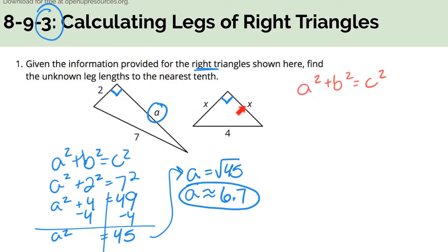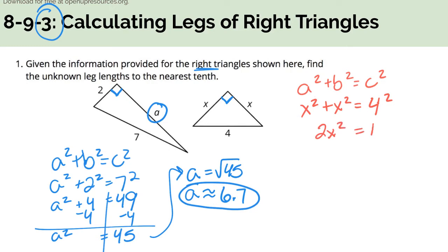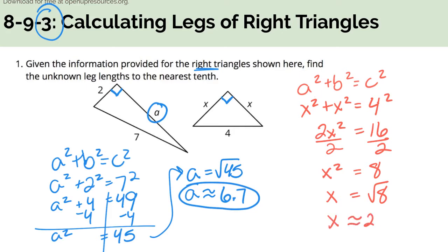This next problem is really unique because there are two sides we don't know, but they're both X, so both of those lengths are the same. I'm still going to use the Pythagorean theorem because it is a right triangle. X is a leg on both sides, so A and B are both X and the hypotenuse is 4. I have X squared plus X squared, which simplifies to 2X squared, and 4 squared is 16. Dividing both sides by 2 gives X squared equals 8, so X equals the square root of 8, which is approximately 2.8.